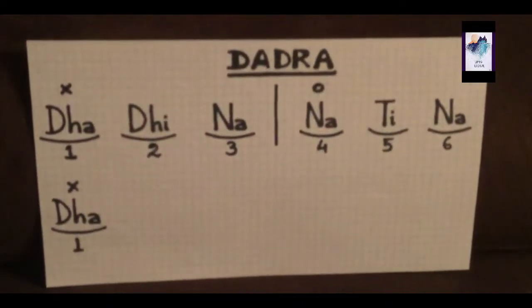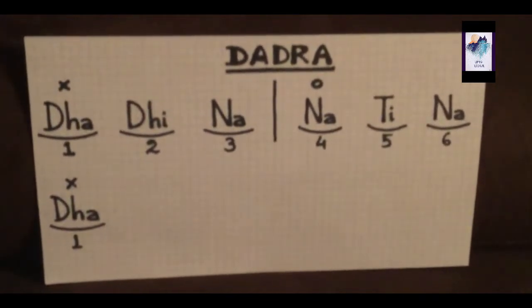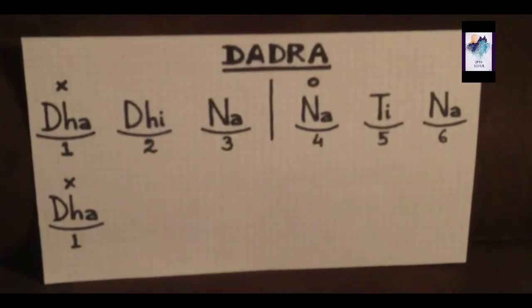This is the formation: Dha Dhi Na Na Ti Na Dha. In double loy: Dha Dhi Na Na Ti Na — Dha Dhi Na Na Ti Na Dha. Two Tal cycles will be included in one Bilambit cycle. If we do the loy in double speed: Dha Dhi Na Na Ti Na — Dha Dhi Na Na Ti Na — Dha Dhi Na Na Ti Na Dha. First beat is Dha, second beat is Dhi, third beat is Na, fourth beat is Na, fifth beat is Ti, and sixth beat is Na.